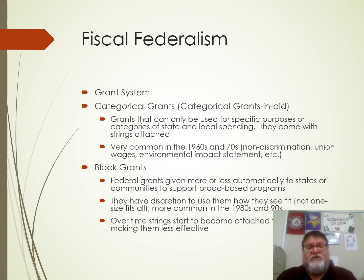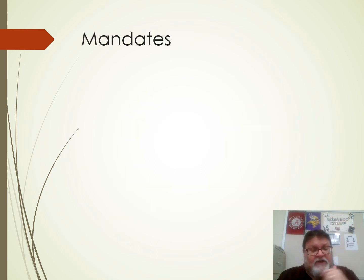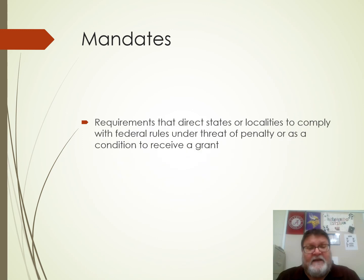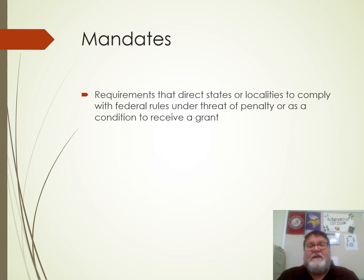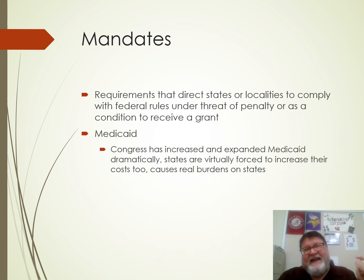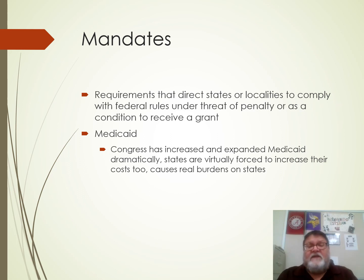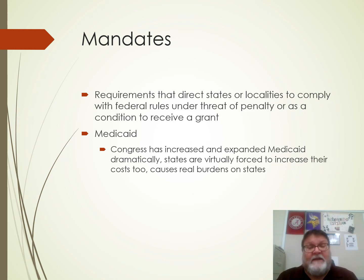Over time, though, strings start to become attached to block grants, making them less effective. Mandates are requirements that direct states to comply with federal rules under threat of not receiving the grant. Medicaid is a great example — remember, Medicaid is the program for poor people, not the program for old people, that's Medicare. Congress has increased and expanded Medicaid eligibility dramatically, and it's forced the states to comply, which has caused a real burden for the states because they often can't afford it and don't get enough money from the national government to help them.